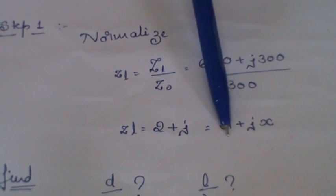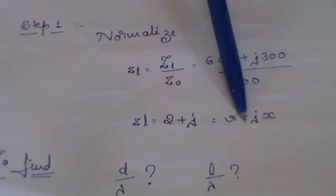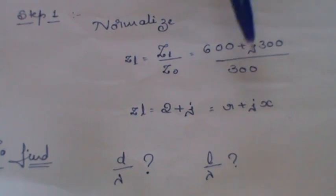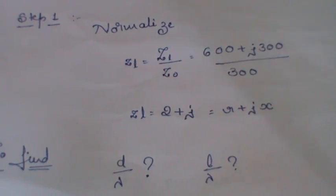This 2 I need to mark in the R circles and this 1 j I need to mark in the X circles. It is plus j, so I need to consider positive reactance. Let us move with the Smith chart.